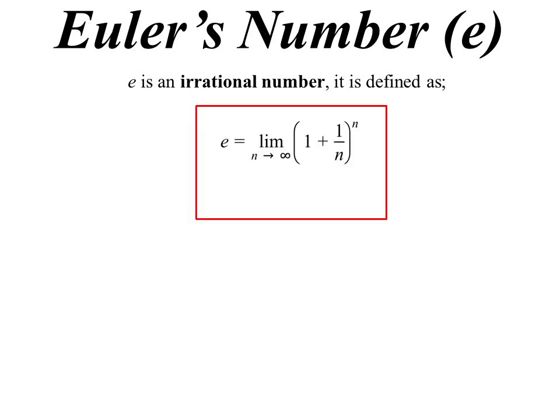The limit as n approaches infinity of 1 plus 1 over n all to the power of n. So as n gets bigger and bigger and bigger, that limit will get closer and closer to the exact value of e.